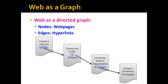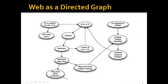In the web graph, the nodes are web pages and the edges are hyperlinks. For example, my homepage might link to a course website, which mentions the computer science building. Naturally, that web page would also be linked to the computer science department homepage, which in turn links to the Rutgers University homepage. So the web is a directed graph where nodes are connected to each other using hyperlinks.